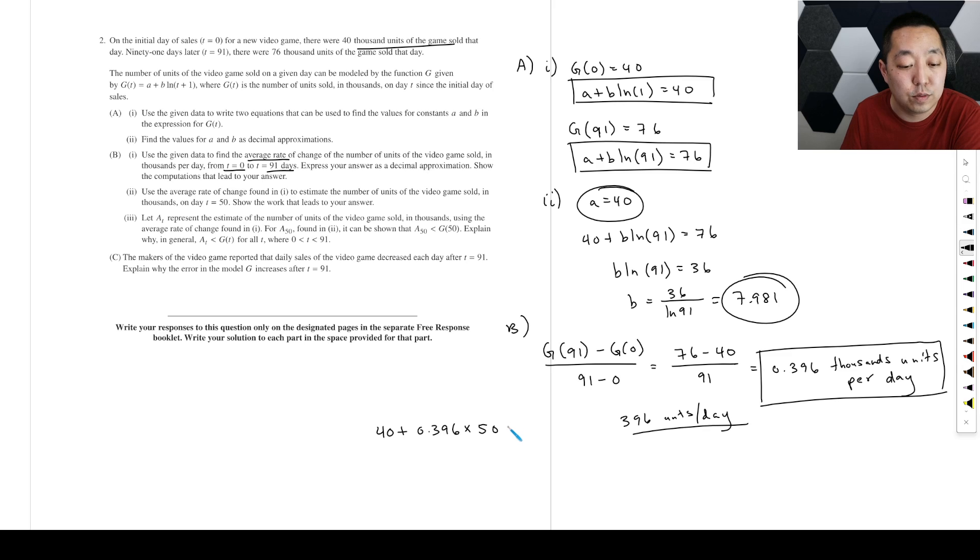T equals 50 for T equals 50. So this is what we're going to do for this calculation here. You're going to start with this amount, and you're going to talk about the rate of change times the number of days. So this is like saying I started with 40,000, and then 0.396 thousandths per day times 50 days is how much it grew by, and I add that to that original 40 there.